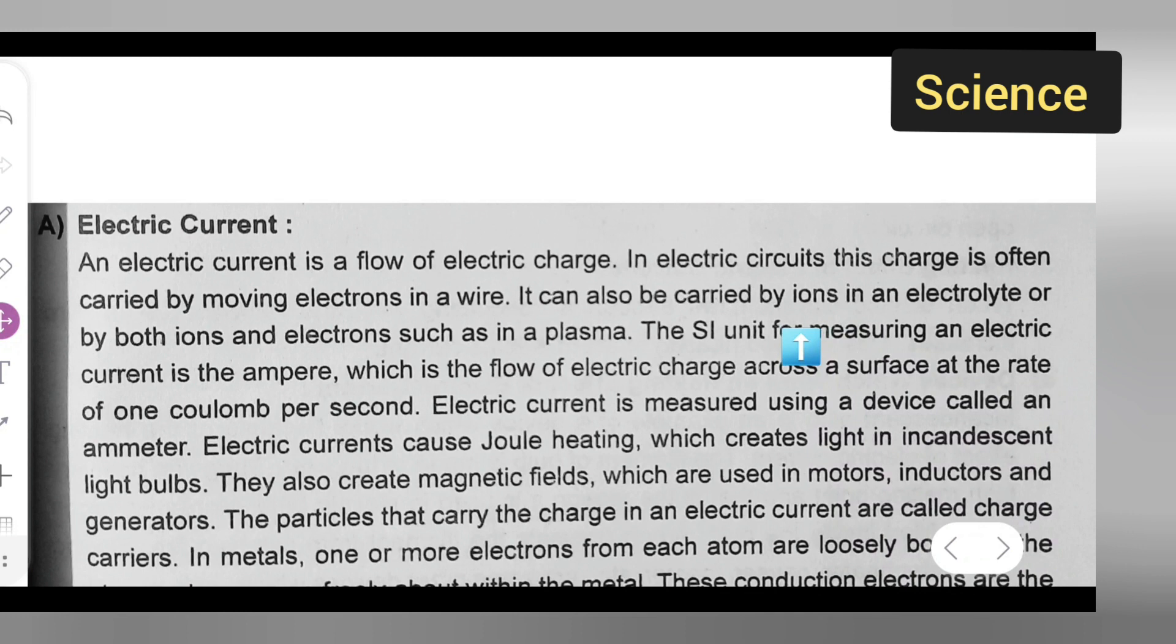Electric current: An electric current is a flow of electric charge. In electric circuits, this charge is often carried by moving electrons in a wire. It can also be carried by ions in an electrolyte or by both ions and electrons such as in a plasma.